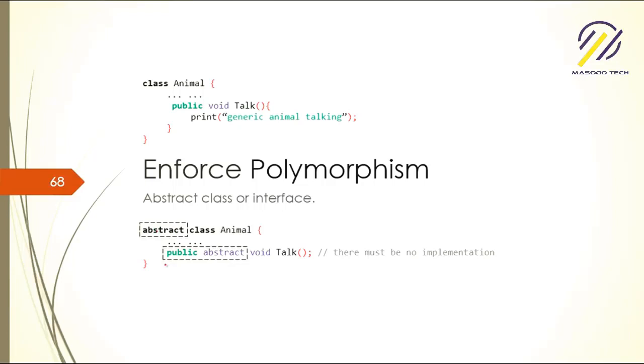Make a method public abstract so it must be implemented by the developer who implements the class or inherits from this class. That's how you're going to enforce polymorphism.